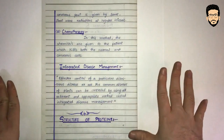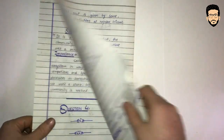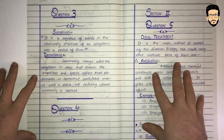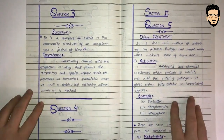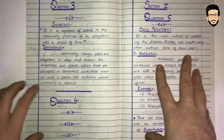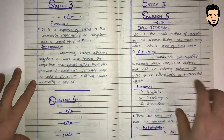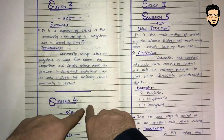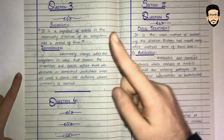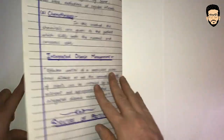It's not compulsory, so if you have time to underline, you can underline. If you don't underline, that doesn't matter. In biology, you have to remember the diagram and underline if you have time. The diagram is very important.